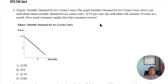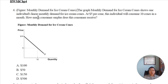Now let's look at question four. The figure 'Monthly Demand for Ice Cream Cones' — demand is a flow, it must be measured during a period of time. At this second I do not need ice cream, but over one week I may have one or two. The graph shows one individual's linear monthly demand for ice cream cones. At $5 per cone, this is the price.